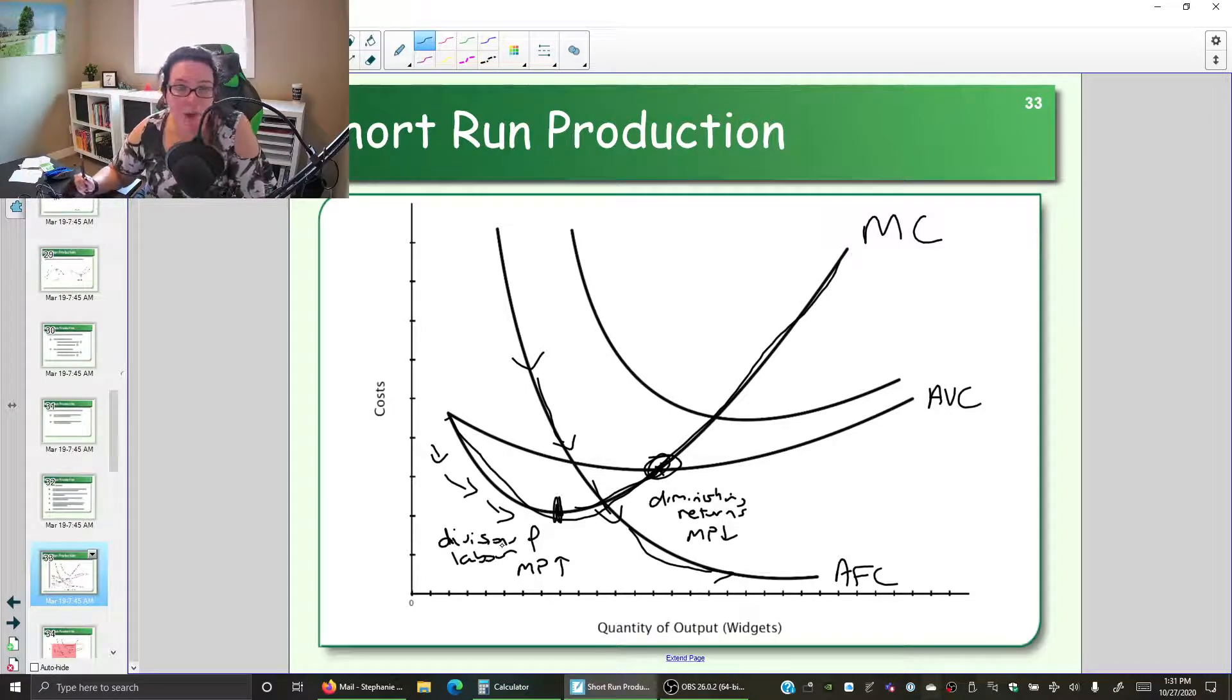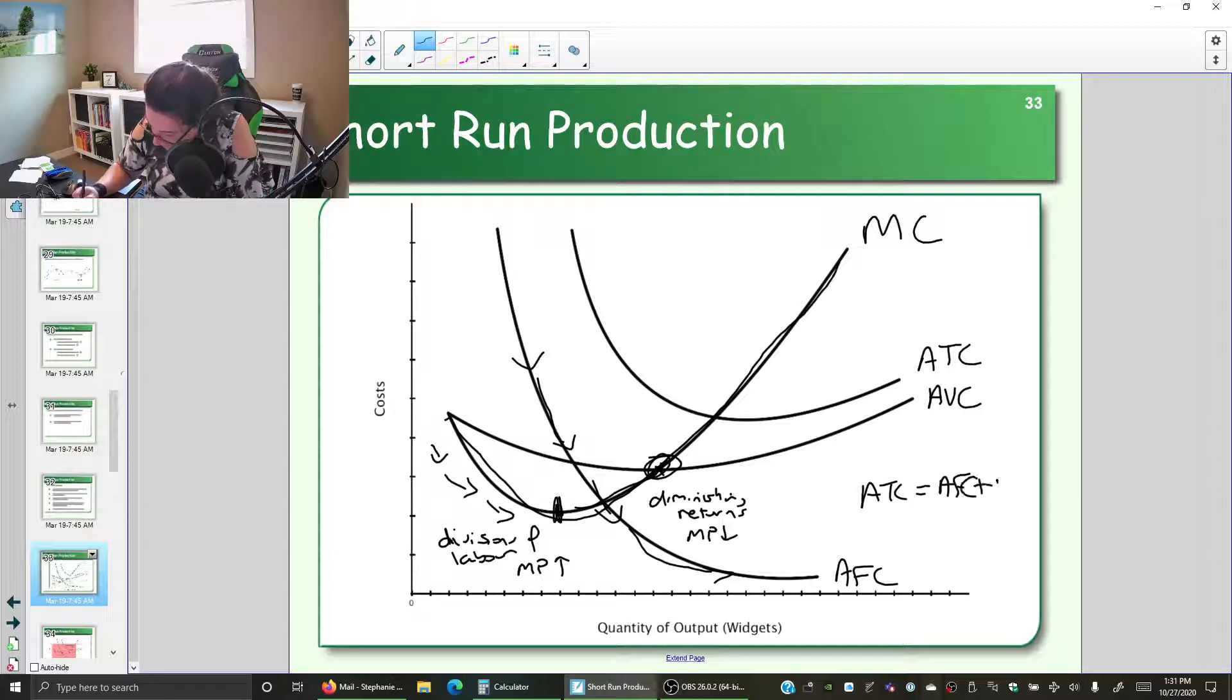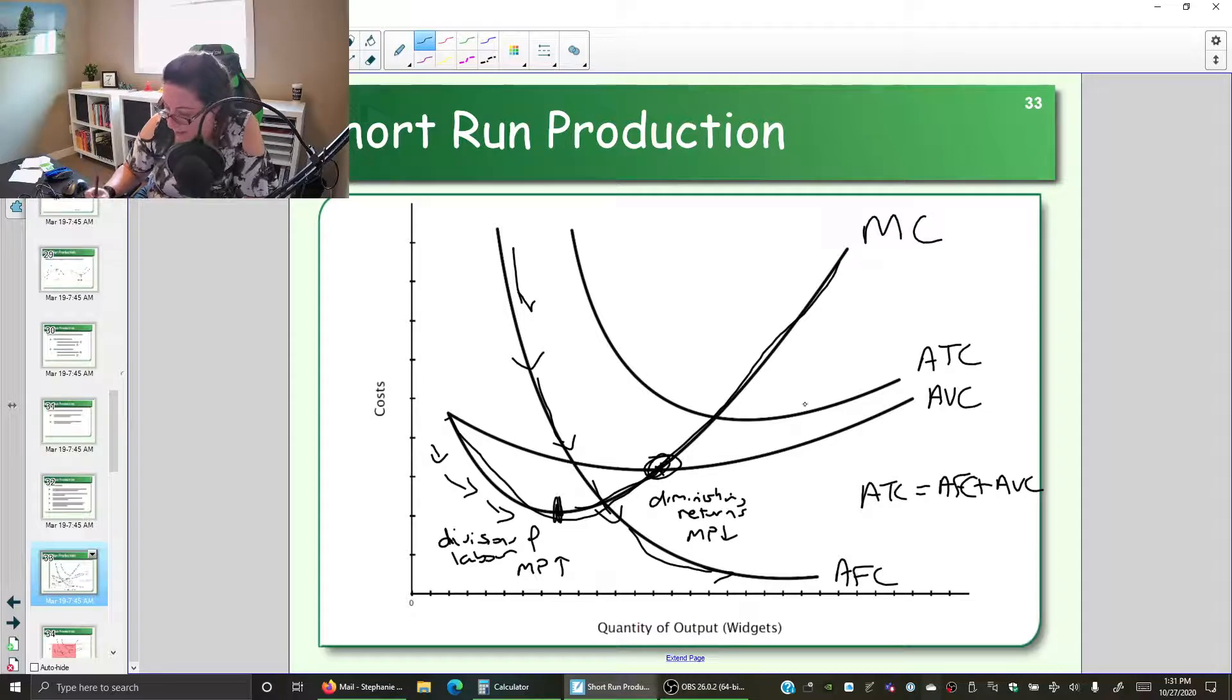The last curve is average total cost, which also has a U shape. That's because average total cost is average fixed cost plus average variable cost. We see a big drop in average fixed cost pulling it down. Then average fixed cost gets very tiny, so average variable cost takes over in the formula, and we see it going up.